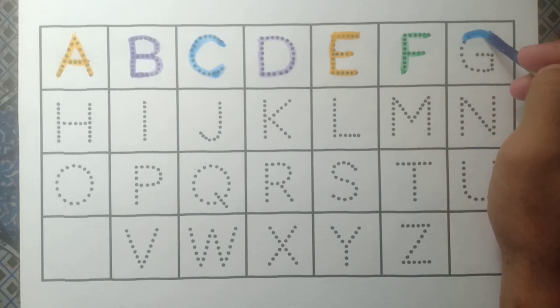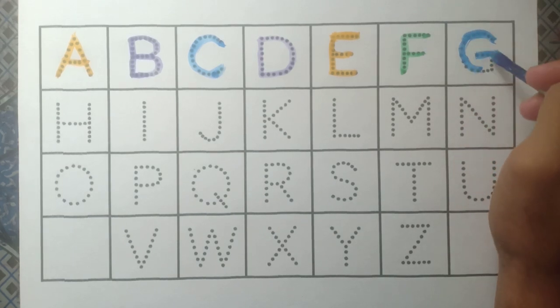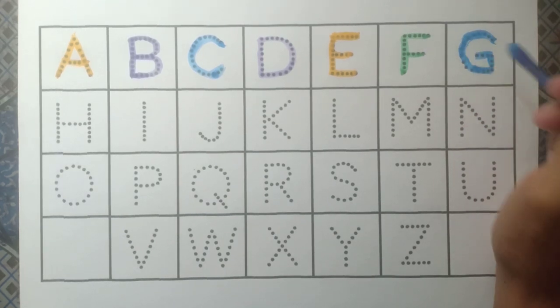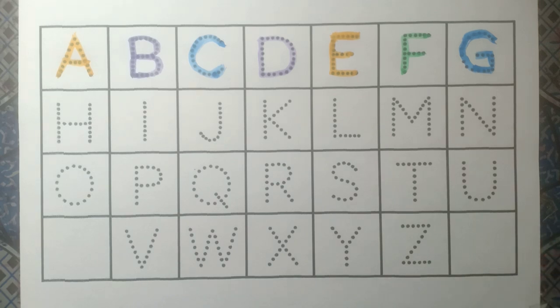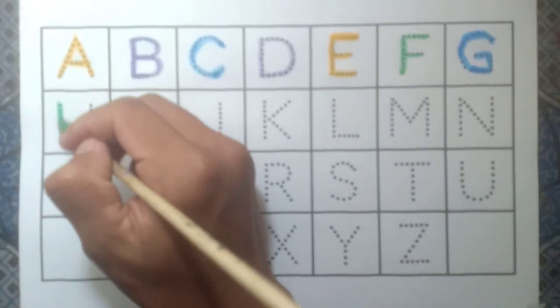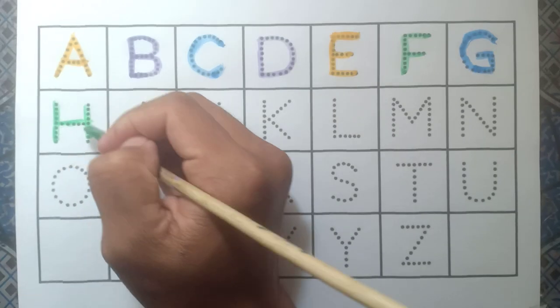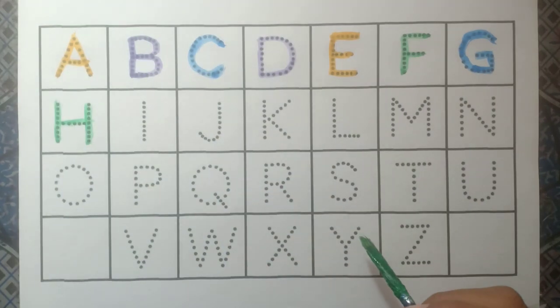G for dog, blue color. H for hand, green color.